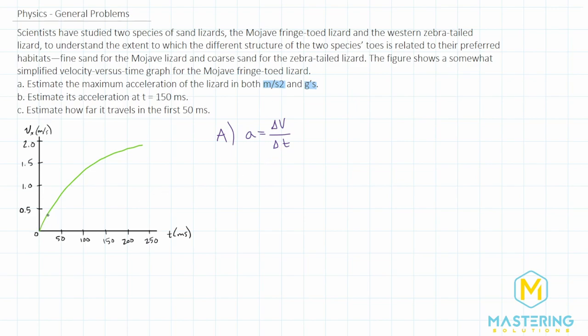So the steepest slope is going to be here at the beginning. If we draw tangent lines like this, like that, and like that, you can see the one that has the highest slope is near the beginning. So since it's just an estimate, what we'll be doing is we'll take the acceleration from right here at 50 milliseconds and at the beginning at zero.